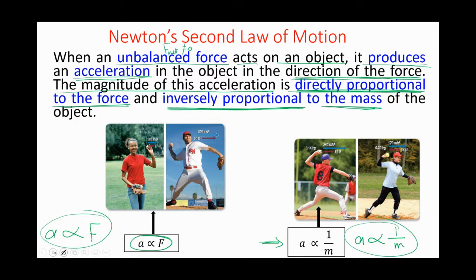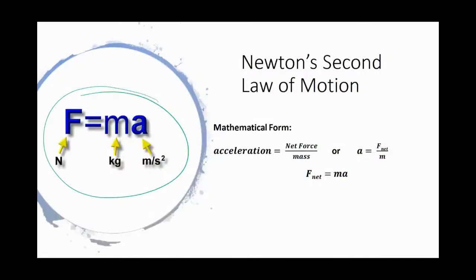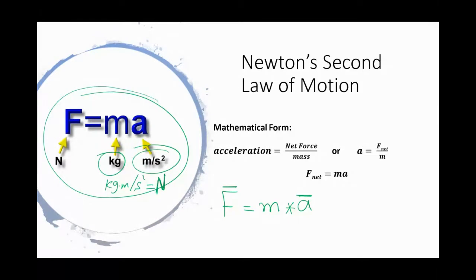Newton studied these relationships and wrote his famous equation: force equals mass times acceleration (F = ma). Force and acceleration are both vectors and must be in the same direction. The unit of acceleration is meters per second squared, so mass times acceleration gives kilogram·meter per second squared, which we call the Newton. If looking for acceleration: a = F/m.